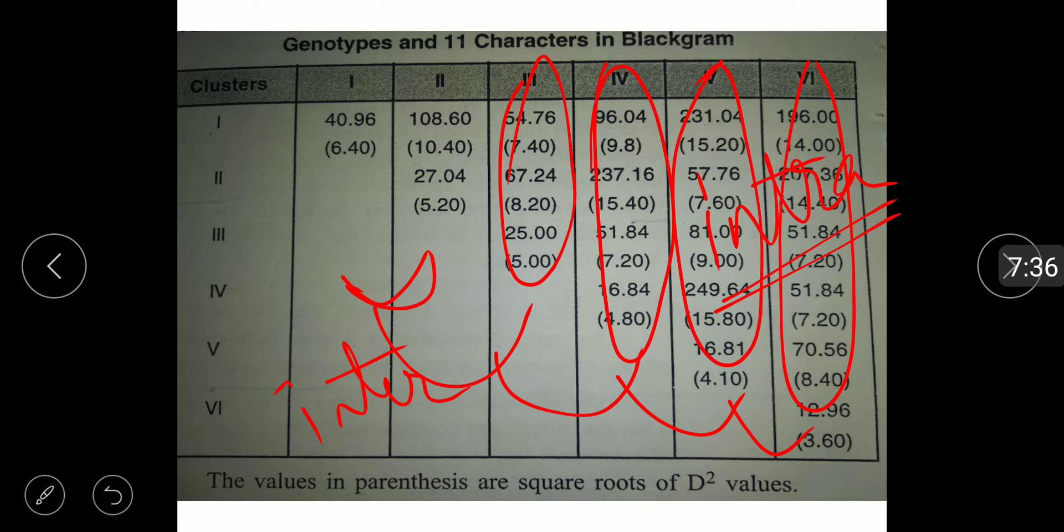And the important thing is that the merits of this analysis is it helps in the selection of divergent parents for the exploitation in hybridization program and it measures degree of diversification and determines the relative proportion of each component character to the total divergence. This technique provides reliable estimates of genetic divergence and a large number of germplasm can be evaluated at a time for genetic diversity by this technique.